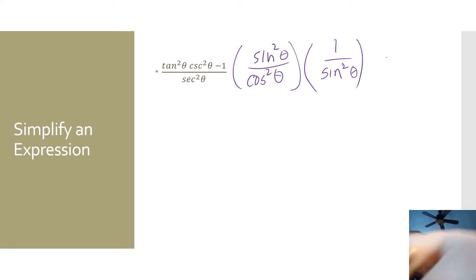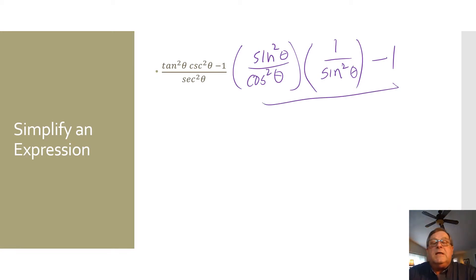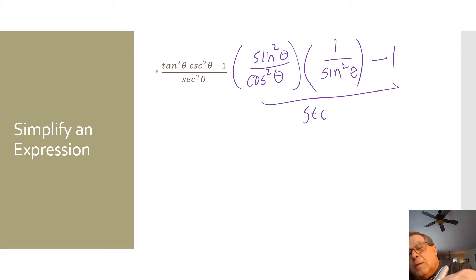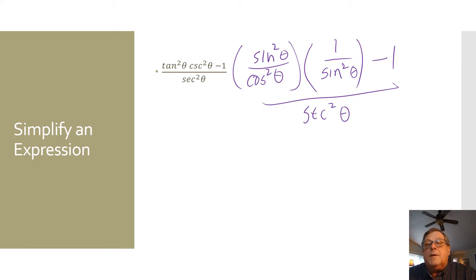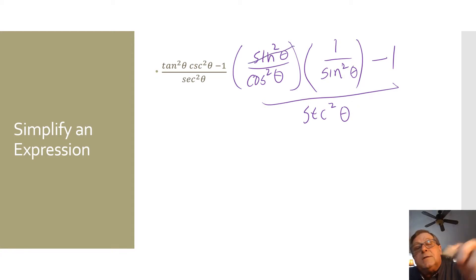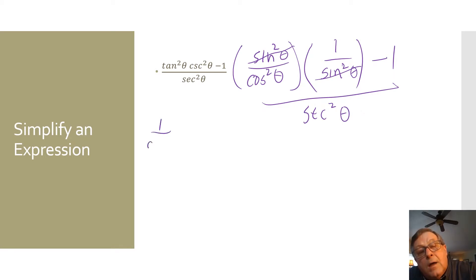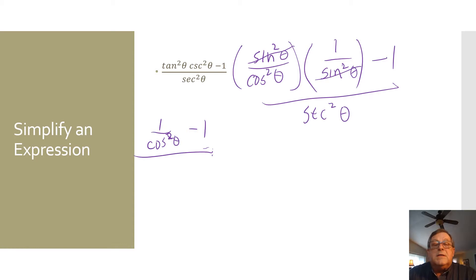And we'll go ahead with the minus 1, and that's over the secant squared of theta. So if we've got sine squared of theta over cosine squared of theta, times 1 over sine squared of theta, the sine squared terms cancel out, leaving us with 1 over cosine squared of theta minus 1, all over the secant squared of theta.